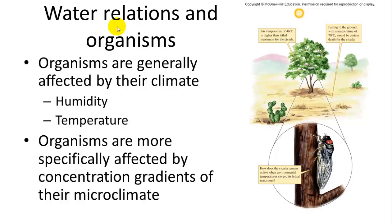They are specifically affected by concentration gradients of their microclimate. So even within the shade that's going to be a lower temperature, they may find areas where there is more or less moisture. And the example given in the book is of experiments done on the Cicada to figure out how it is able to develop a system for cooling, despite being in such very, very hot environments.